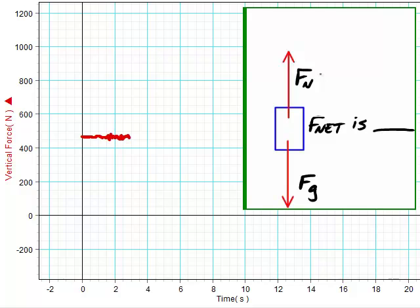If she just stands there, her acceleration is zero, and the net force is zero. The normal force equals the weight, and that's why we normally think of scales as reading your weight. If you just stand there, the normal force reading of the scale is numerically equal to your weight.